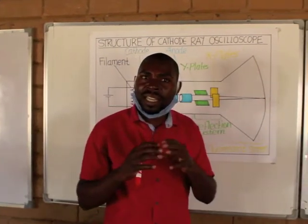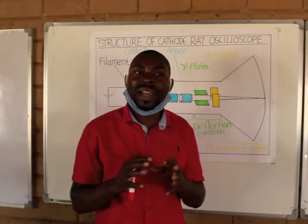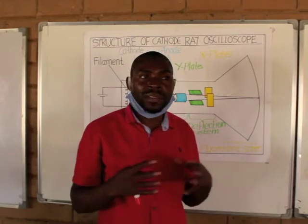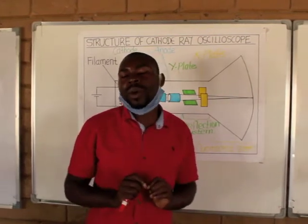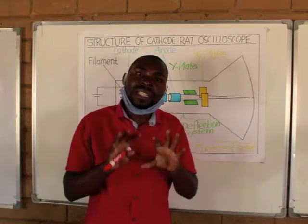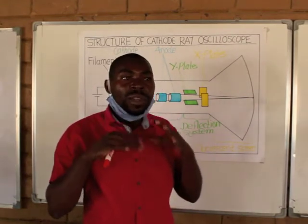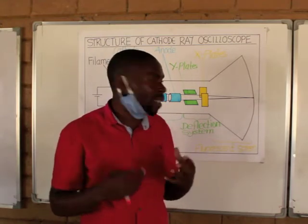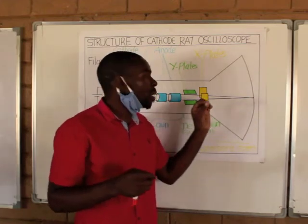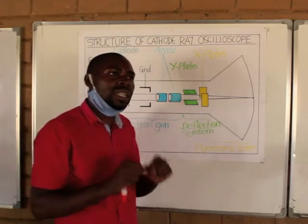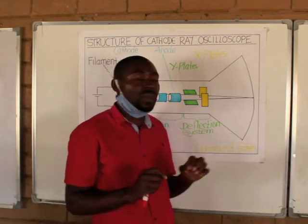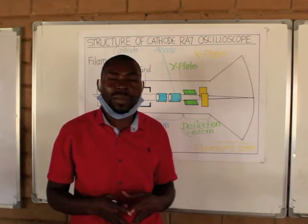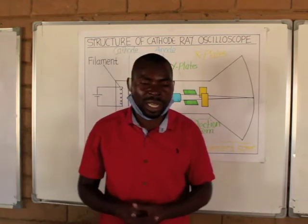If you are standing in front of a TV screen, when you switch it on for the first time, the first thing you are going to see are some spots that will be moving up and down like droplets of rays. Those are what we call electrons, and those electrons are going to cause the screen to light up, and then you will see images of different people appearing on the screen.